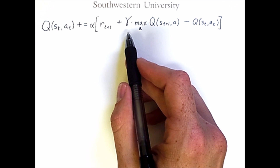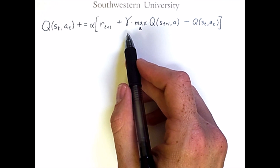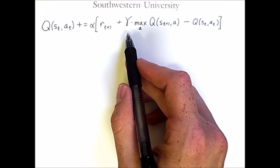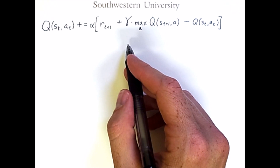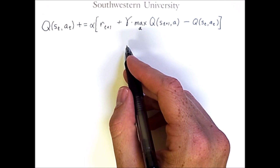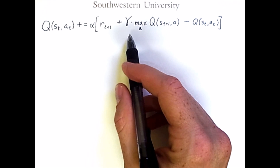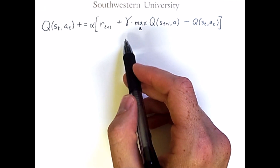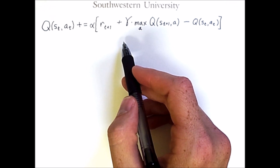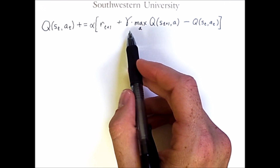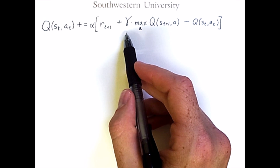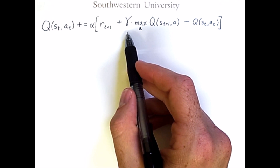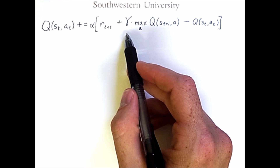Gamma is the discount factor, and it influences how much you care about getting rewards sooner rather than later. If gamma is one, then getting some high reward on the thousandth time step is just as good as getting it on the third time step — there's no difference. But if gamma is less than one, it becomes more important to get rewards sooner rather than later. In the extreme case, reducing gamma all the way to zero means the agent will only care about its immediate rewards and will completely ignore rewards in the future. A gamma value in the range of 0.9 and up is reasonable.